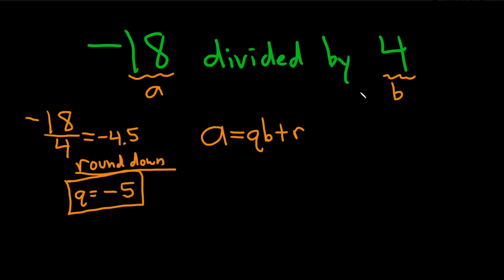To find the remainder, you just plug in all your numbers now. So A is negative 18, Q is negative 5, B is 4, and then plus our remainder. Let's see what that could be.